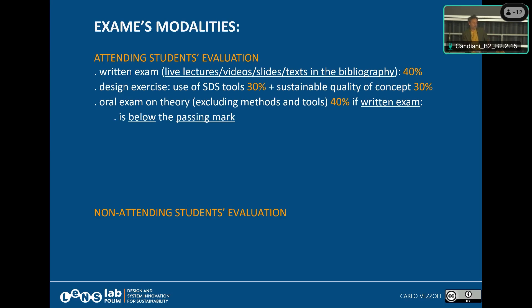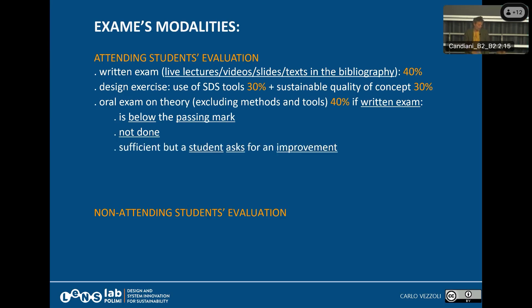If you are below the passing mark on the written exam, you have to make an oral exam. Also, if you weren't able to attend the session, or if something happened, you will be asked to make the oral examination. Or, if you pass the exam but are not satisfied with the mark and want 30 cum laude, you can do an oral examination at your own risk — it may go even lower. With an oral examination it's easier for me to assess the quality of understanding.